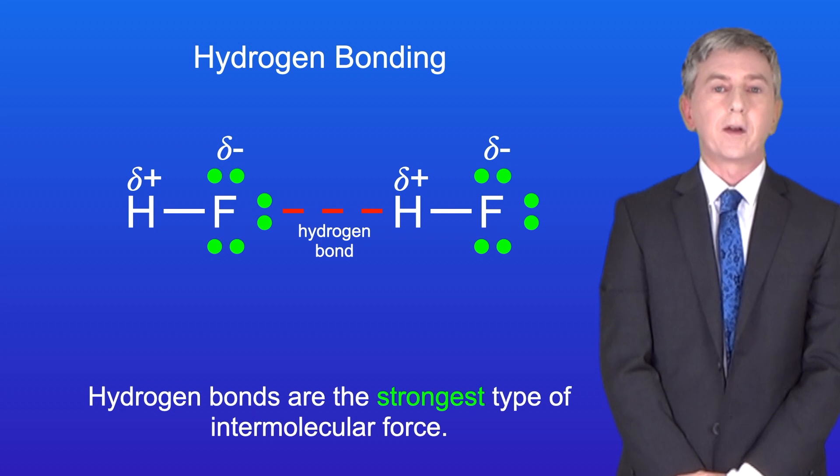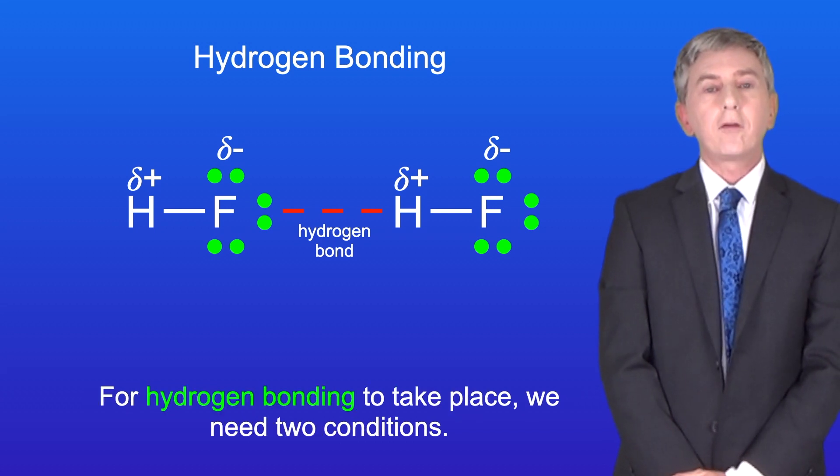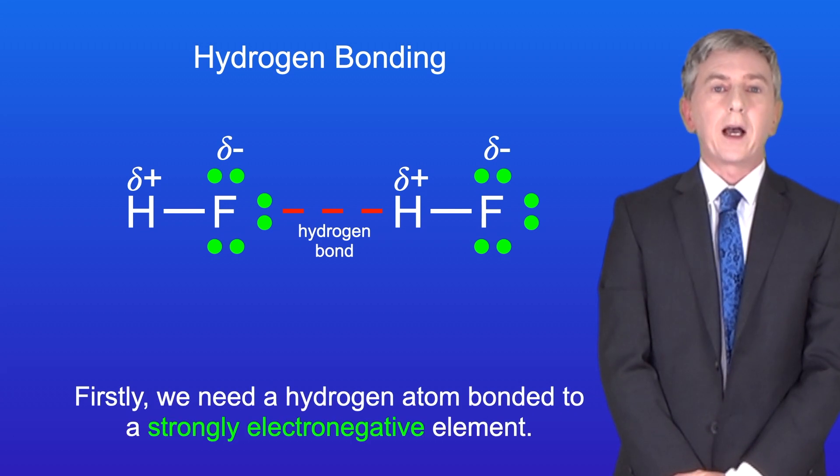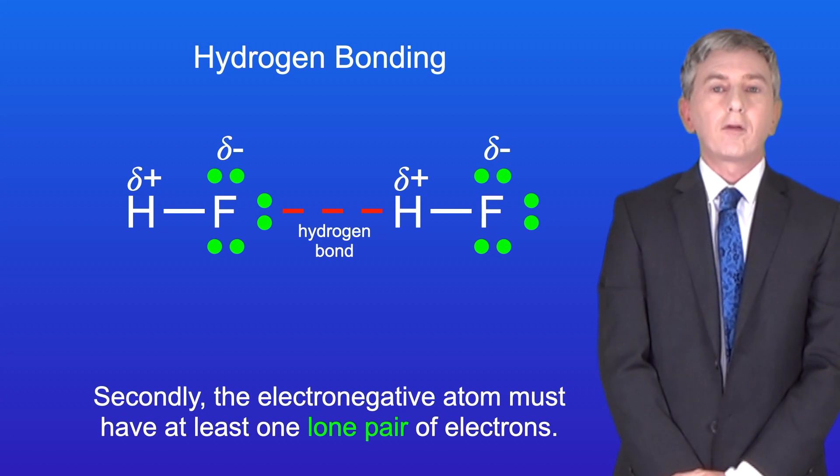Hydrogen bonds are the strongest type of intermolecular force, and for hydrogen bonding to take place, we need two conditions. Firstly, we need a hydrogen atom bonded to a strongly electronegative element. Secondly, the electronegative atom must have at least one lone pair of electrons.